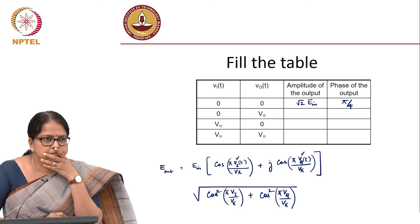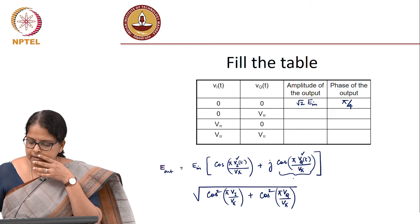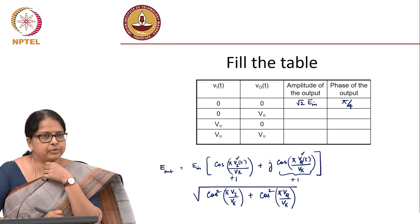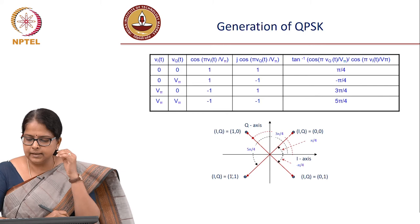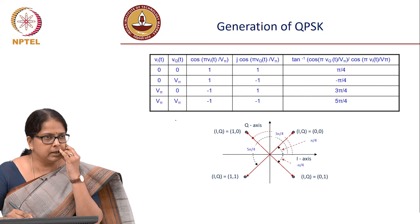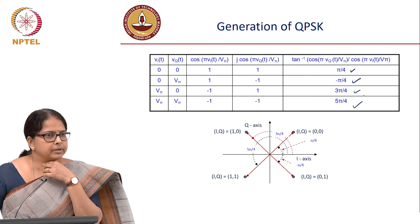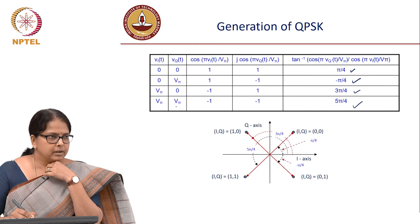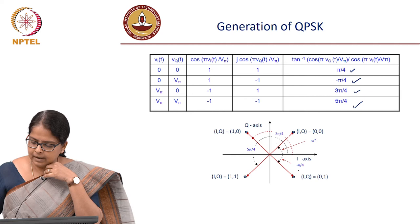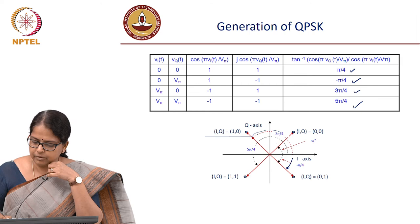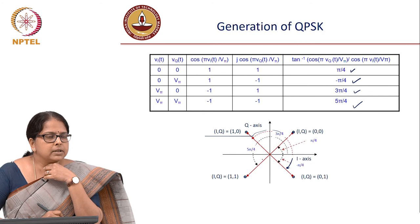What about the phase? It is pi by 4. Why pi by 4? Because when both voltages are 0, both cos terms equal 1, so tan⁻¹(1/1) = pi/4. You can work out the other cases similarly. The amplitude remains the same as √2 throughout, but the phase changes as pi/4, −pi/4, 3pi/4, or 5pi/4 depending on what voltage you give at the input. This is how QPSK modulation is achieved.